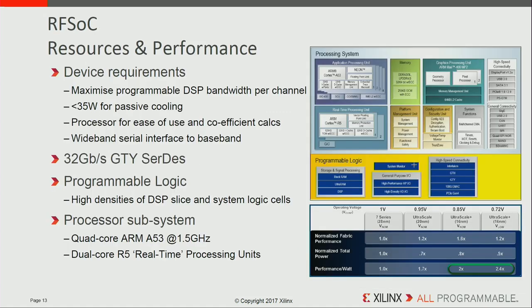In terms of resources, it's integrated with our UltraScale Plus fabric targeting communications applications. DSP is extremely important in wireless, so we maximize programmable DSP bandwidth per channel. Most applications are passively cooled, requiring less than about 35 watts on the device. We have the embedded UltraScale Plus processing subsystem used for coefficient calculations in the DSP. We've also introduced 32 gigabit per second SERDES integrated with this device, high densities of DSP slices and system logic cells, and a processor subsystem — a quad-core ARM53 running at 1.5 GHz, plus real-time processing units.